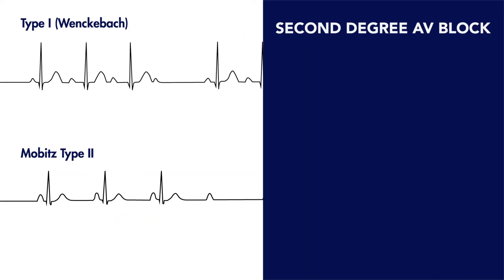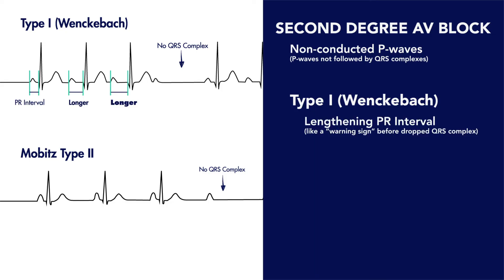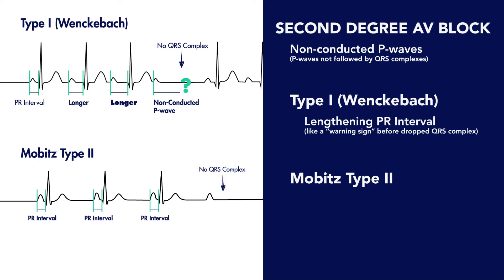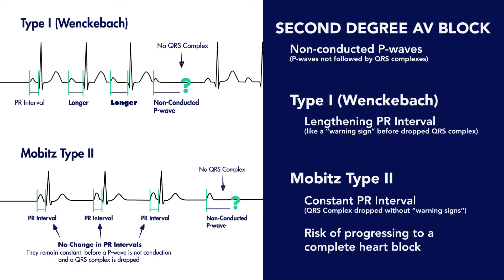In summary, with second degree AV blocks, you'll see occasional P waves that are not followed by a QRS complex. In type 1 second degree AV blocks, you'll see a progressively lengthening PR interval before the missing or non-conducted QRS complex. In type 2 second degree AV blocks, you won't see any changes in the PR intervals — instead, P waves appear normally along with their associated QRS complexes until a P wave is not fully conducted and a QRS complex is suddenly dropped. Of the two, type 2 has a higher risk for progression to complete heart block.